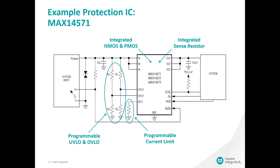The device is rated for 36 volt operating maximum input voltage and up to 4 amps of current limiting capability. At these current levels, we are able to integrate both the NFET for forward direction current limiting and protection, as well as the PFET for reverse current and voltage protection. The device is also very easy to set up. Let's go through the pinout from left to right on the screen.